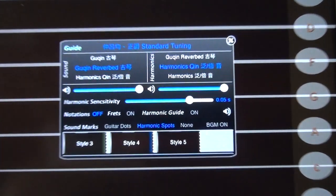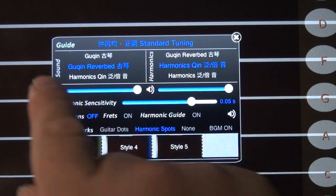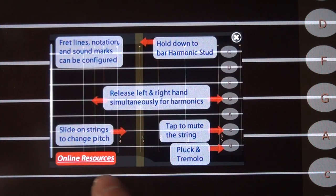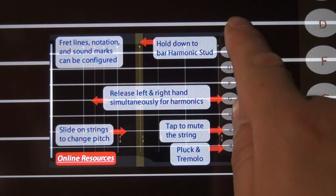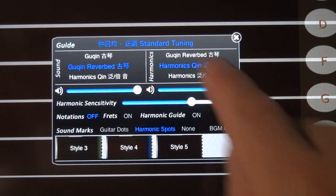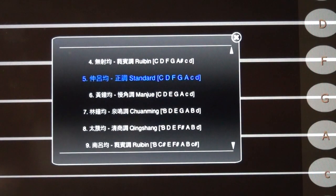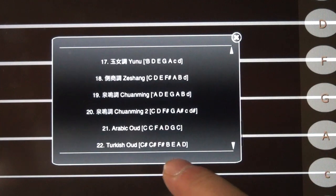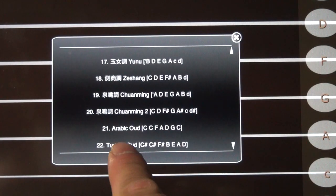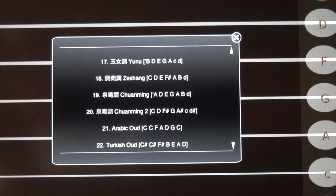Let's zoom in. You can watch the guide here, and there are online guides by tapping that. You can change the tuning by tapping here. There are 22 different tunings, two new ones for the oud lute: Arabic oud and Turkish oud.